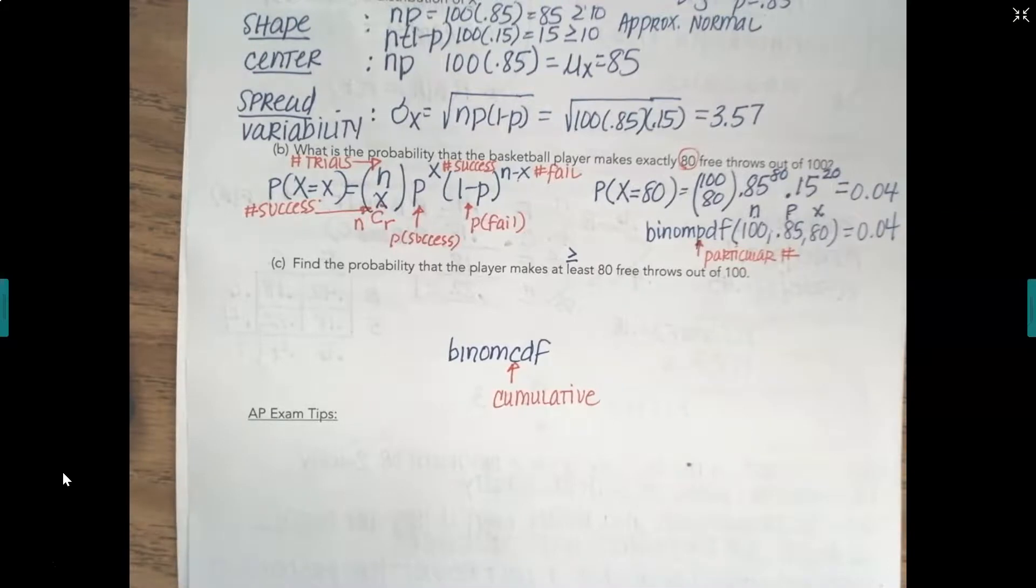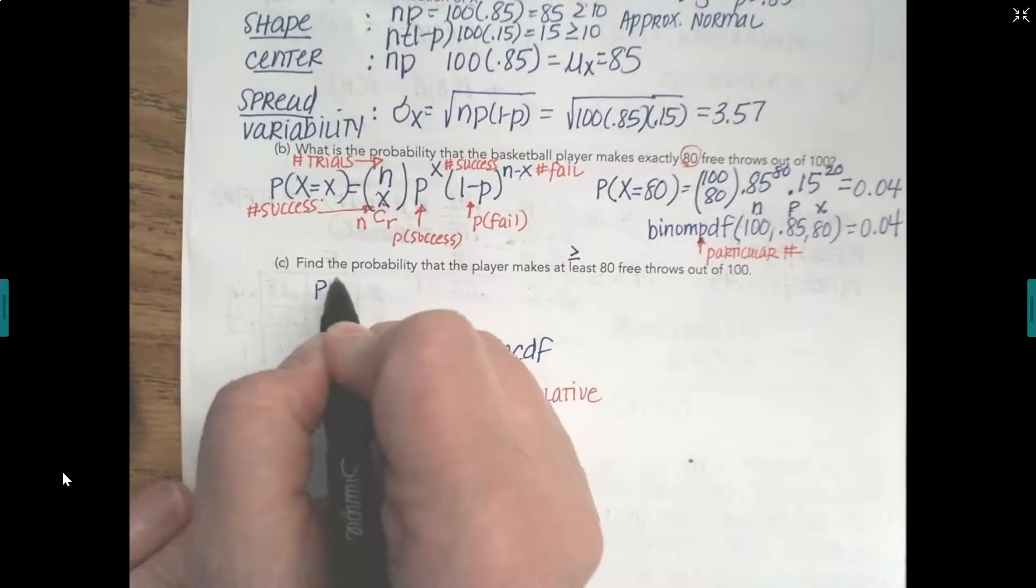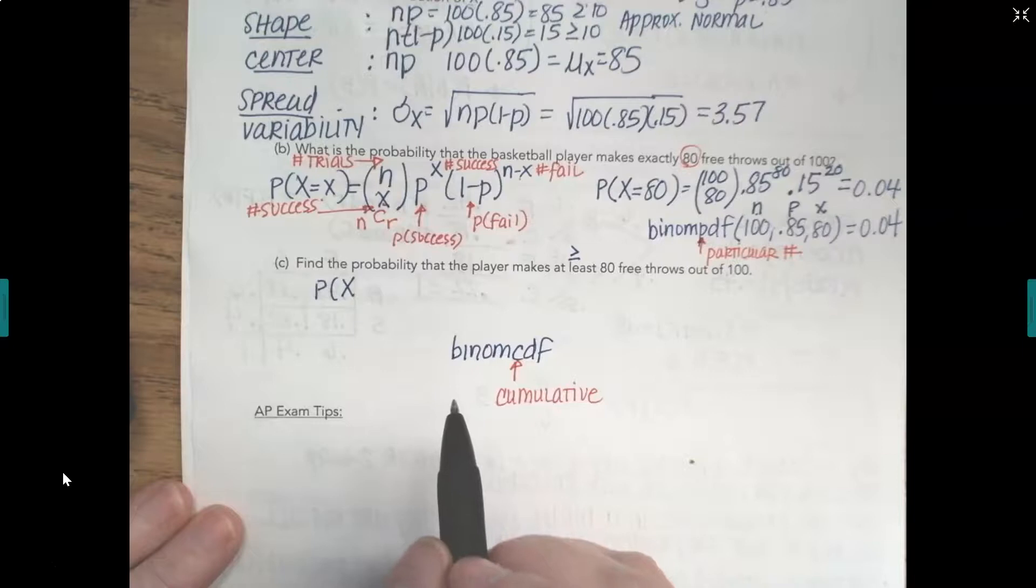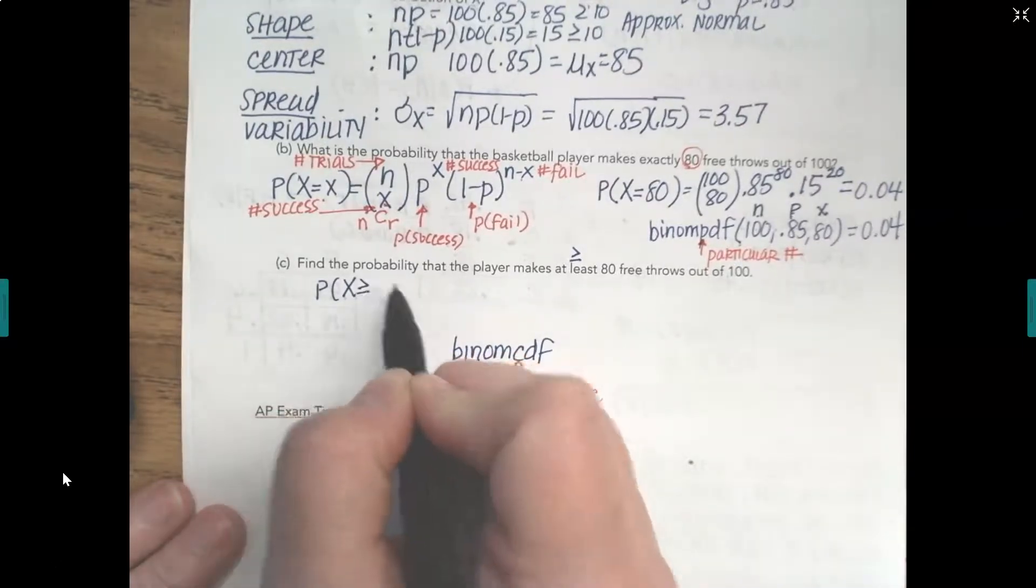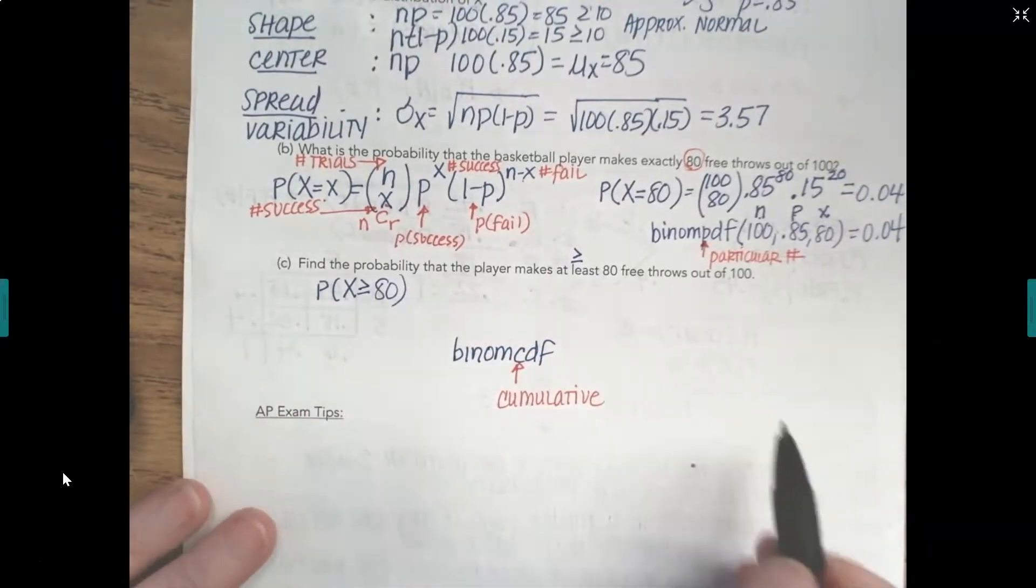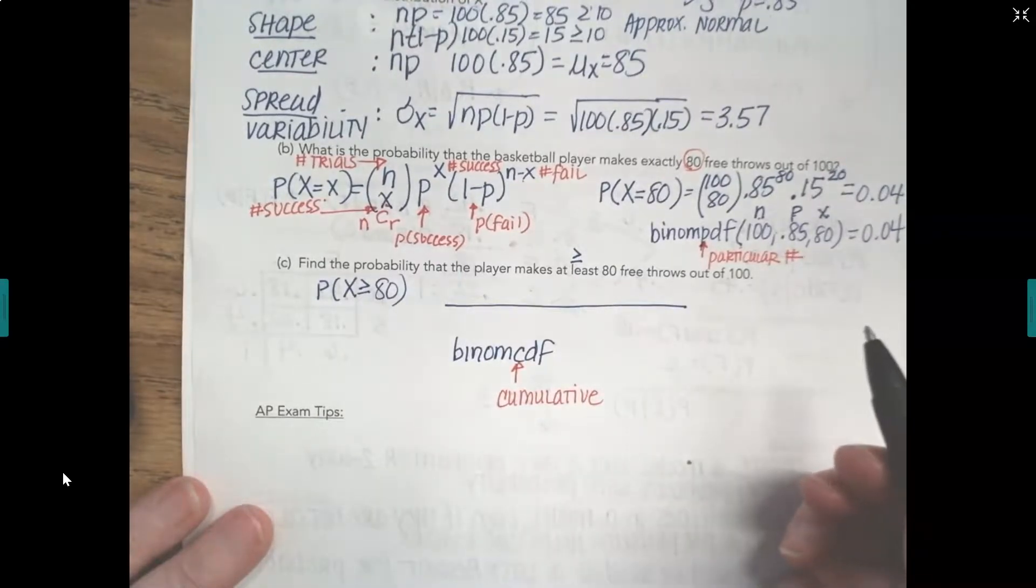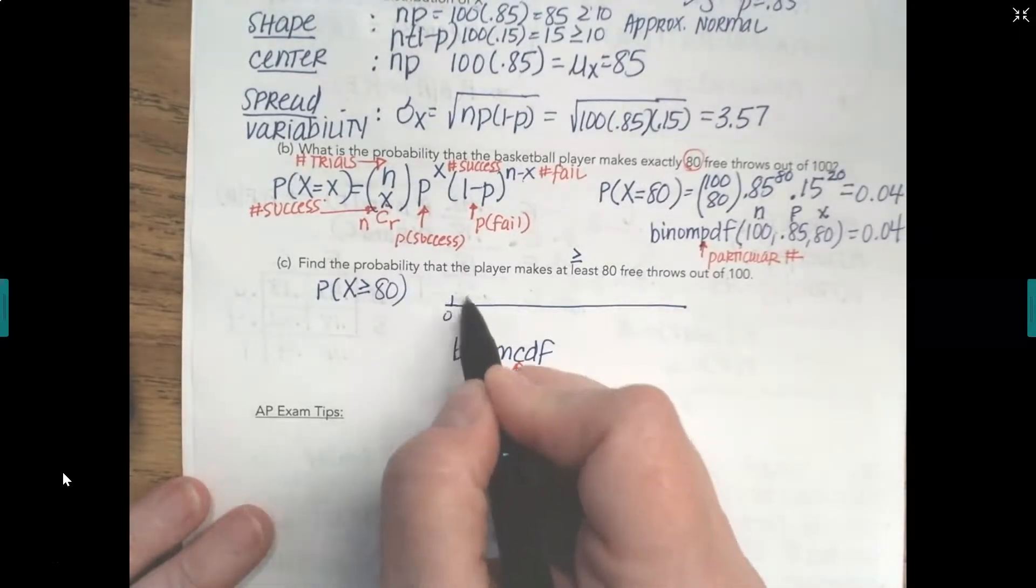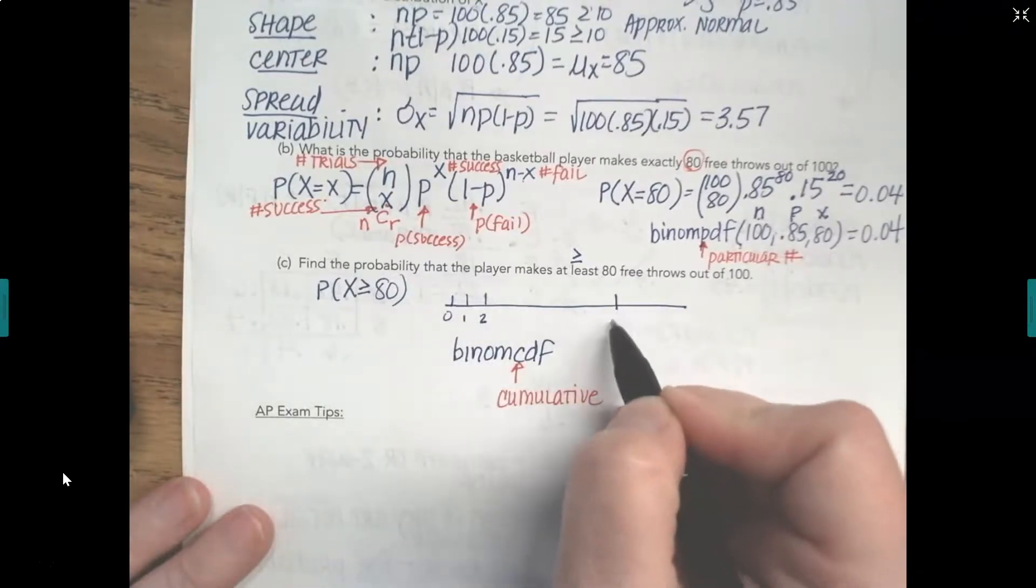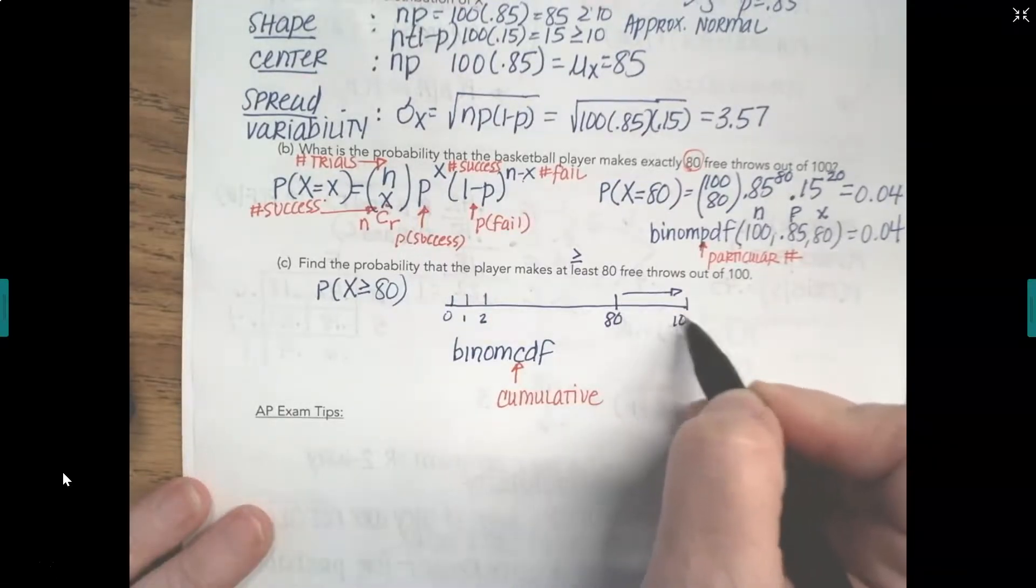So let's, we know we're going to use that, but let's talk about it. We want to know the probability that our random variable X, which is the number of free throws he makes out of 100 attempts, we want it to be at least 80. So we want to know the whole range of numbers. So if, let's make a number line here. These are possible free throws. He can make 0, 1, 2, and we could keep going.